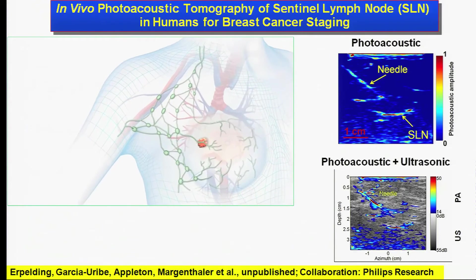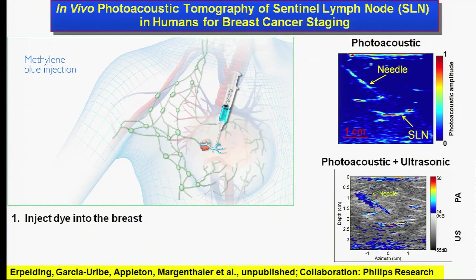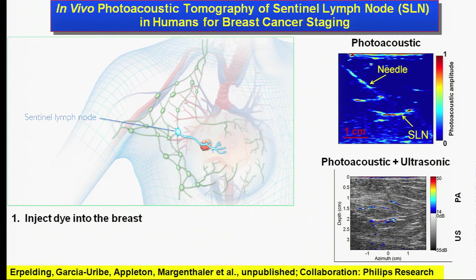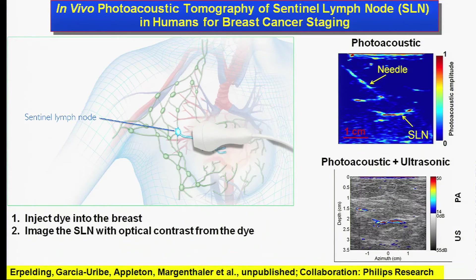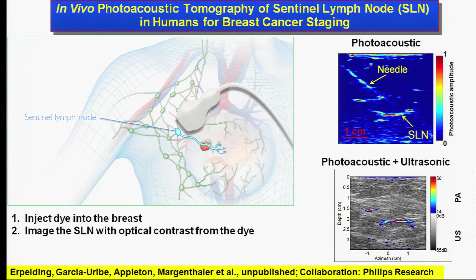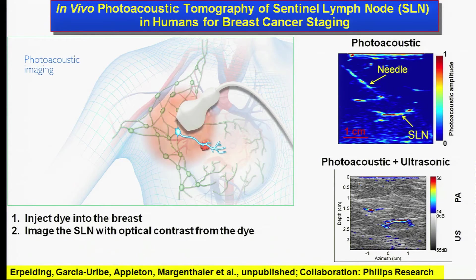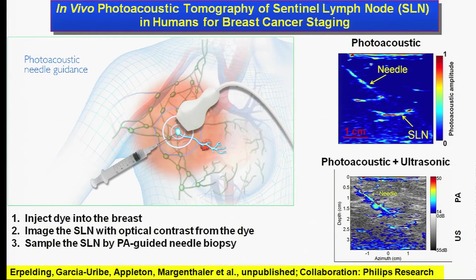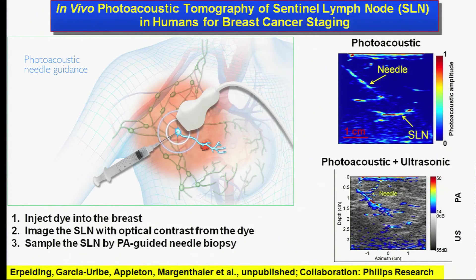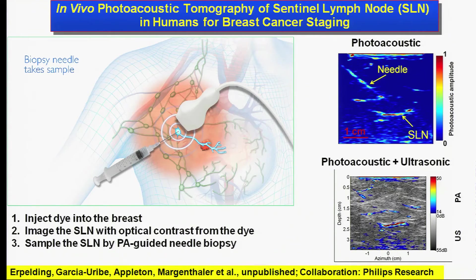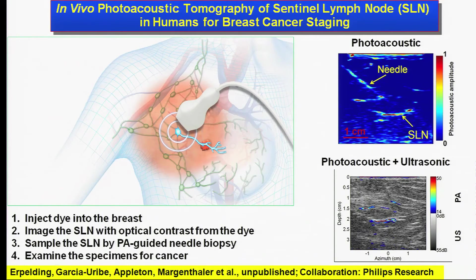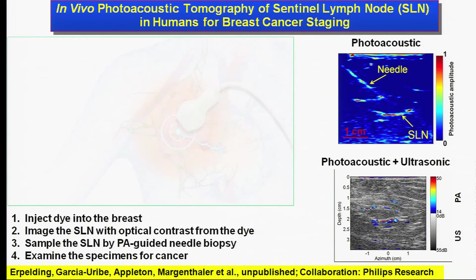Our in vivo human studies indicate the potential of photoacoustic tomography to convert breast cancer staging from open surgery to needle biopsy. Here's the concept: first, an FDA-approved organic dye is injected into the breast; second, the sentinel node — namely the first draining lymph node — is pinpointed photoacoustically with optical contrast from the dye; third, a needle biopsy is guided to sample the node; finally, the biopsy cells are examined for the presence of metastasis.